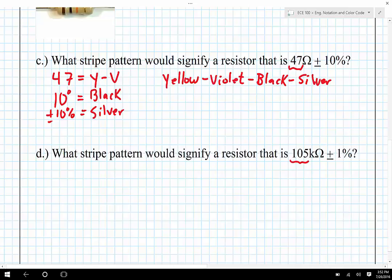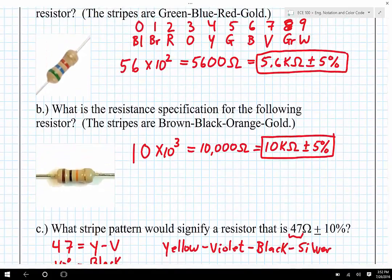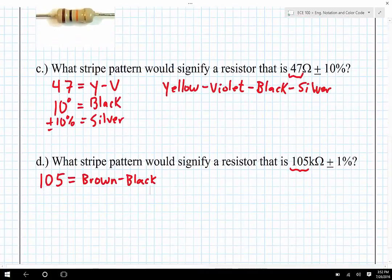So 105 is going to correspond to brown, black, I remember those off the top of my head. Let's scroll back up and see what five is. Oh, five is green. So we're going to have brown, black, green.